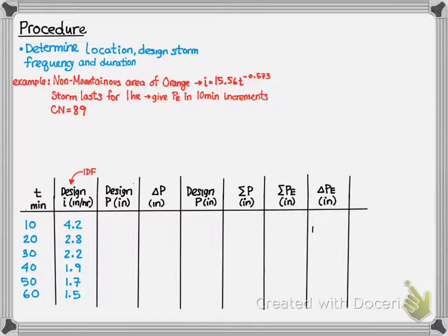Next, we're going to calculate the design depth of rainfall, which is the intensity times the time. So, if we multiply the IDF column by the time over 60 to convert the units, we get 0.7 at 10 minutes. At 20 minutes, we would multiply the 2.8 by 20, divided by 60, we would get 0.9. We would repeat this for each of the subsequent rows: 1.1, 1.3, 1.4, and 1.5. It should be noted that I have rounded this significantly. If you do this in Excel, your values may vary slightly.